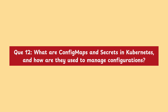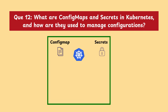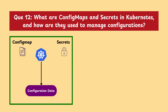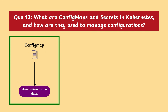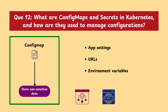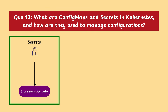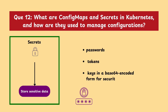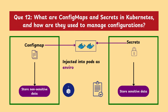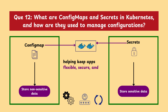Moving on with our next question: what are ConfigMaps and Secrets in Kubernetes and how are they used to manage configurations? ConfigMaps and Secrets are used in Kubernetes to manage configuration data separately from application code. ConfigMaps store non-sensitive data like application settings, URLs, or environment variables. Secrets store sensitive data like passwords, tokens, or keys in a base64 encoded form for security. Both can be injected into pods as environment variables or mounted as files, keeping applications flexible, secure, and easy to update without rebuilding images.